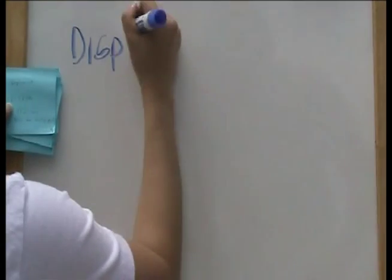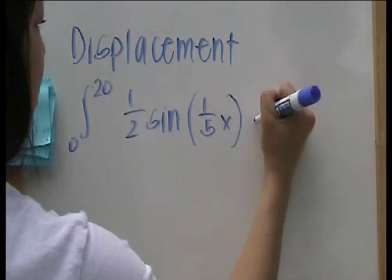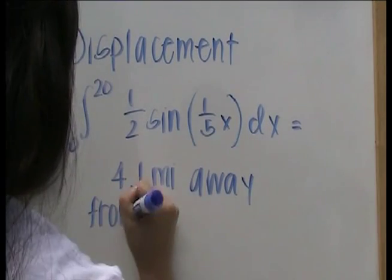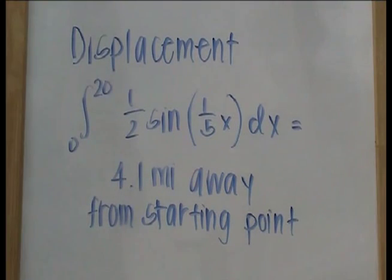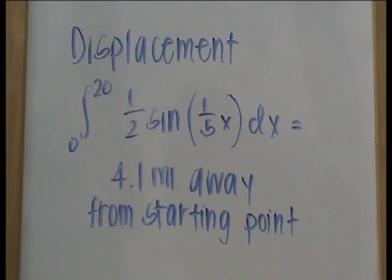The displacement is the integral from 0 to 20 of the function, which is 4.1 miles. Since the displacement is positive, the runner is still in front of the starting point.